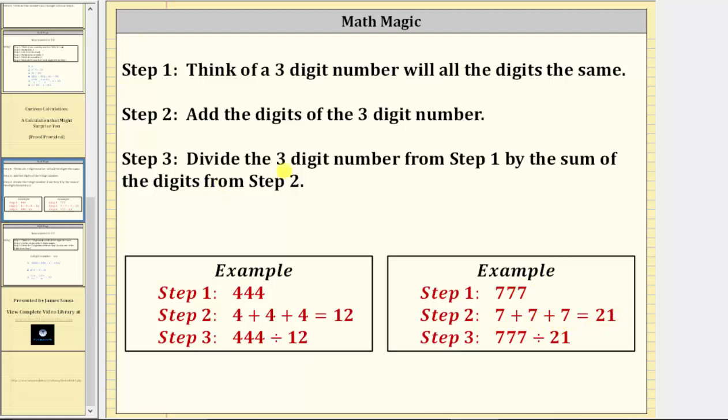Step three, divide the three-digit number from step one by the sum of the digits from step two. Which means for 444, we would have 444 divided by 12. For 777, we would have 777 divided by 21.